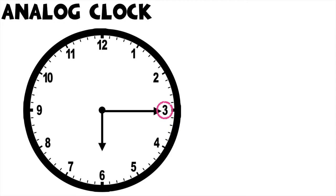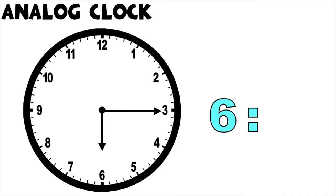When writing time using numerals, we write first the number of hours, which is 6, because the short hand is pointed at 6, followed by the colon, then the number of minutes. Children, how many minutes do we have here? That's correct, we have 15 minutes, since the long hand is pointed at 3. So the time is 6:15.